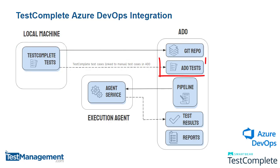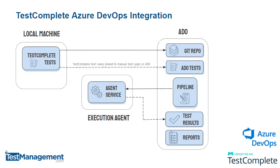You'll have your manual tests defined in ADO and we will link the automated tests that we create to those tests in Azure DevOps. When we're ready to define the process for execution, we create a pipeline and that pipeline specifies the tests that we want to execute, where we're going to execute them, and the schedule that we'll execute those tests on.